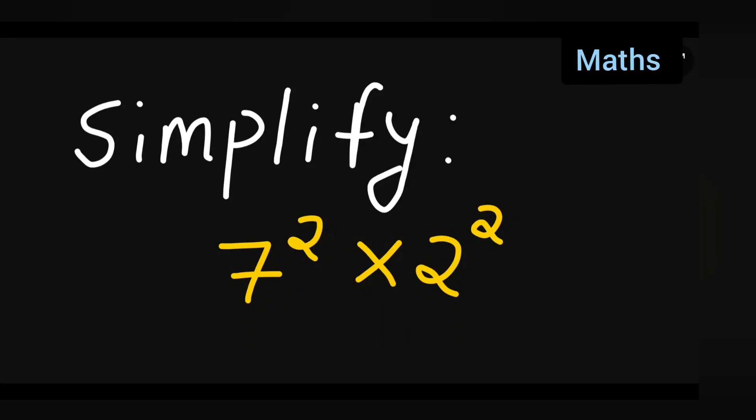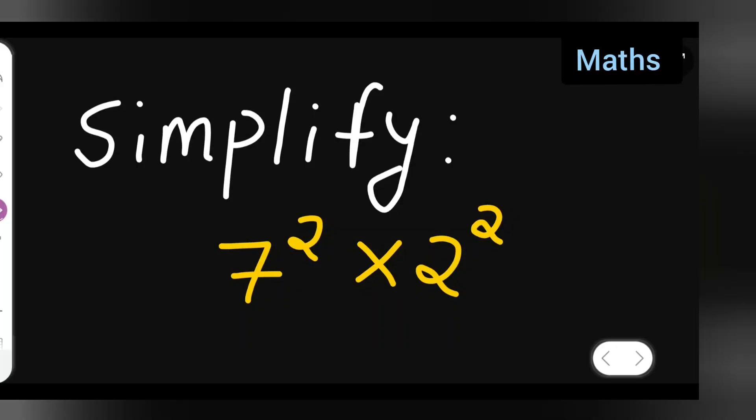So, welcome for today's class of mathematics. Let us see how to simplify 7 square multiplied by 2 square. The question I have taken it from class 7 mathematics. So, you can write down the question first.